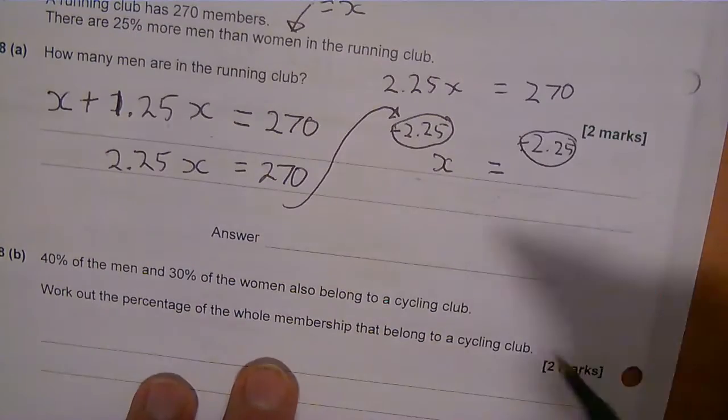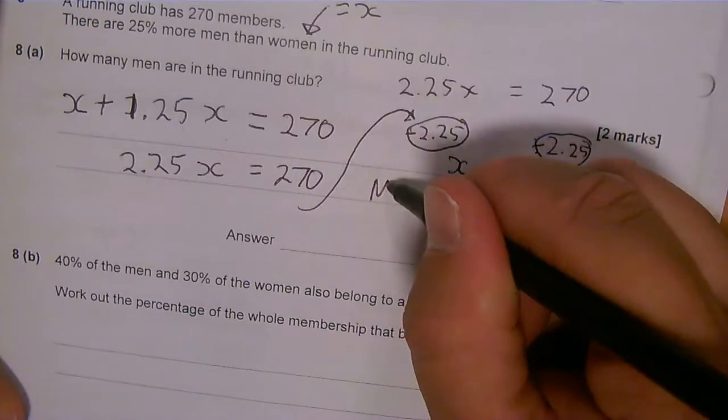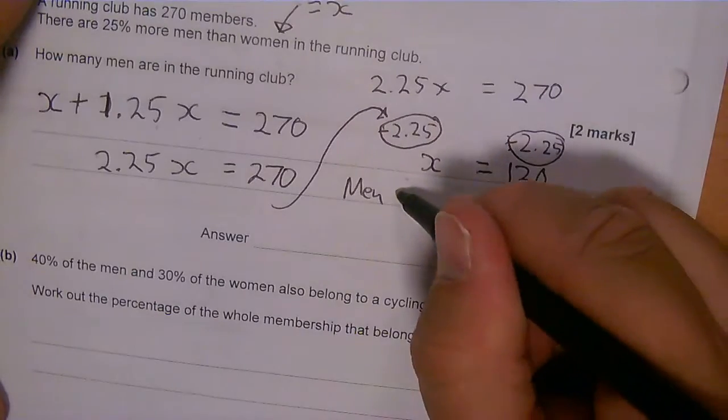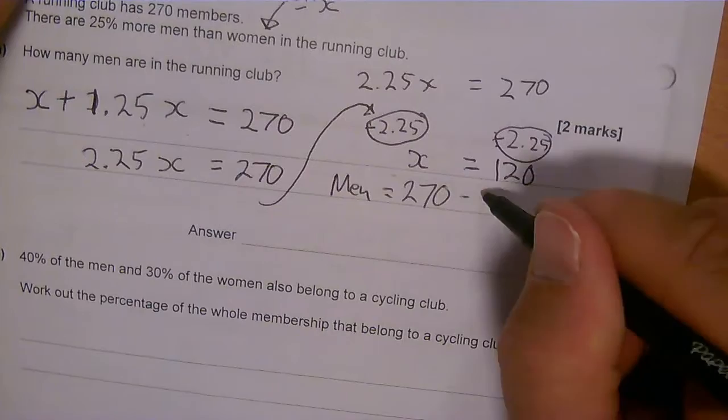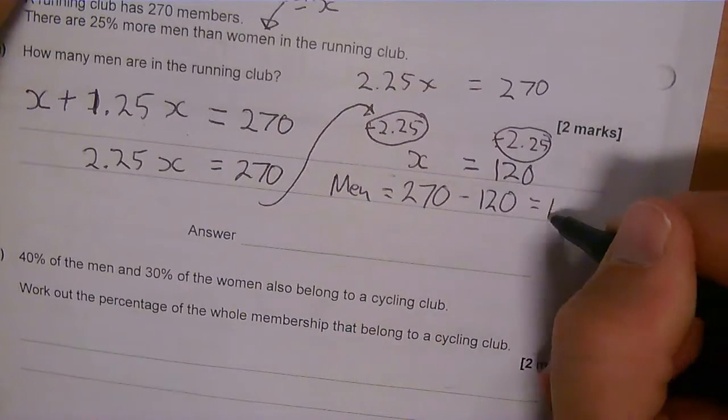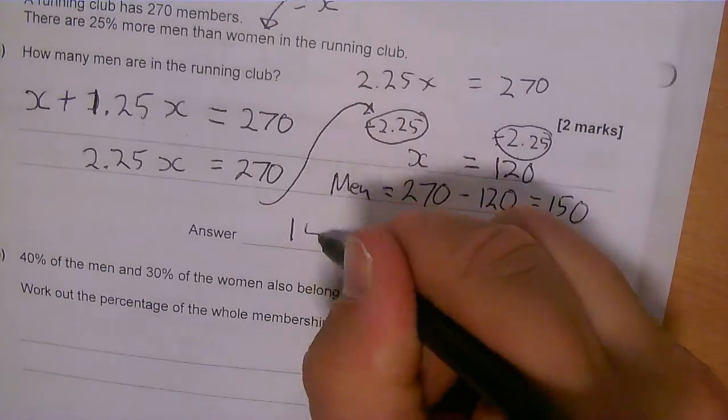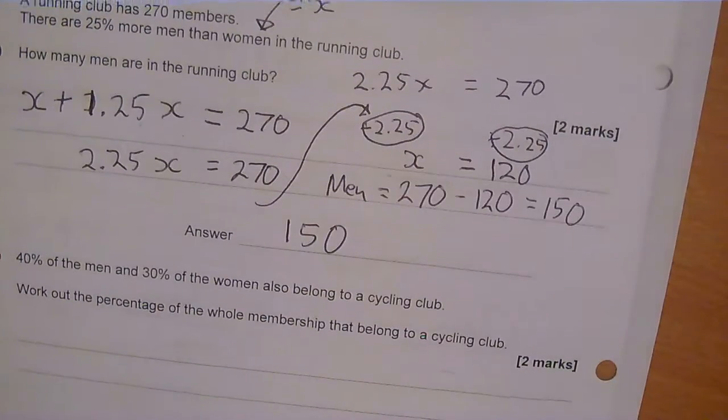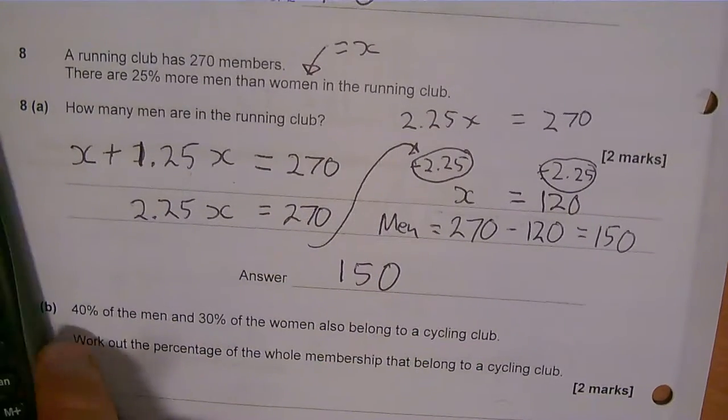So 270 divided by 2.25 - 120 women. All right, so men must be easy. Men would be the rest of them. So the men would be 270 take away 120, which is 150. So my answer is 150. Now that's just one method. There are alternate methods for doing that.